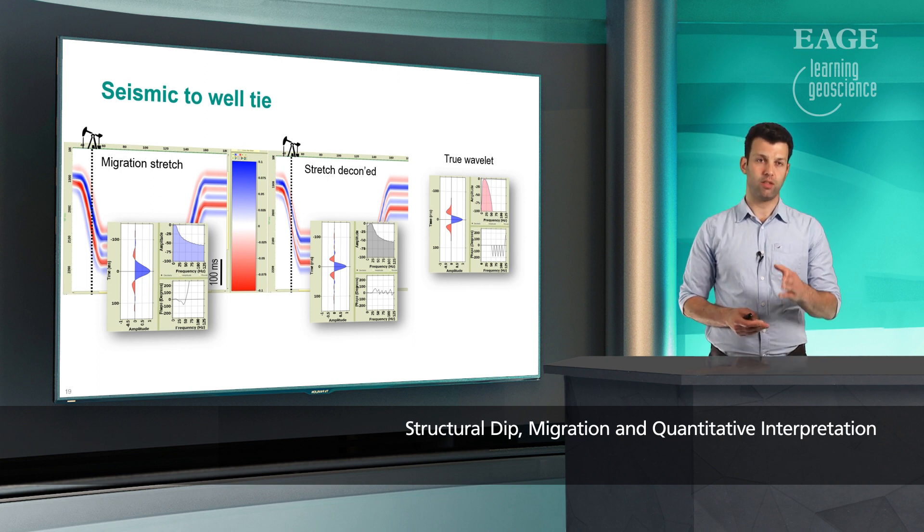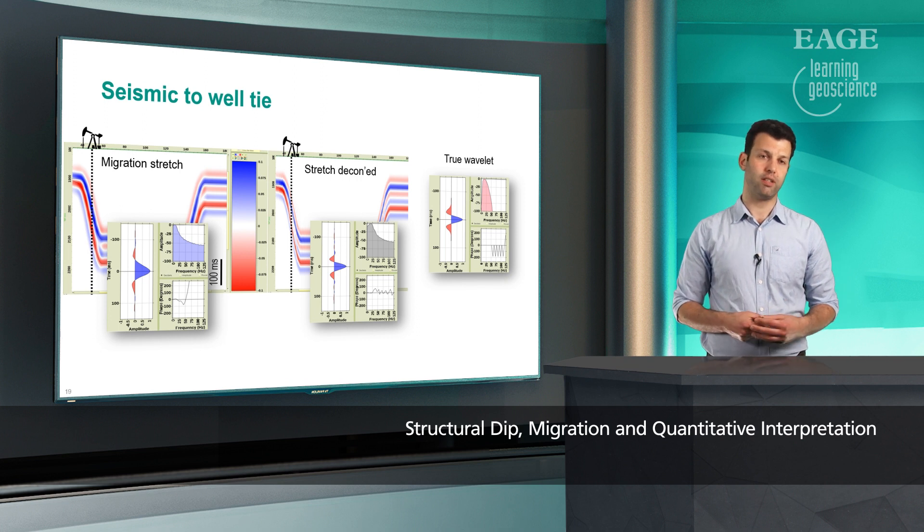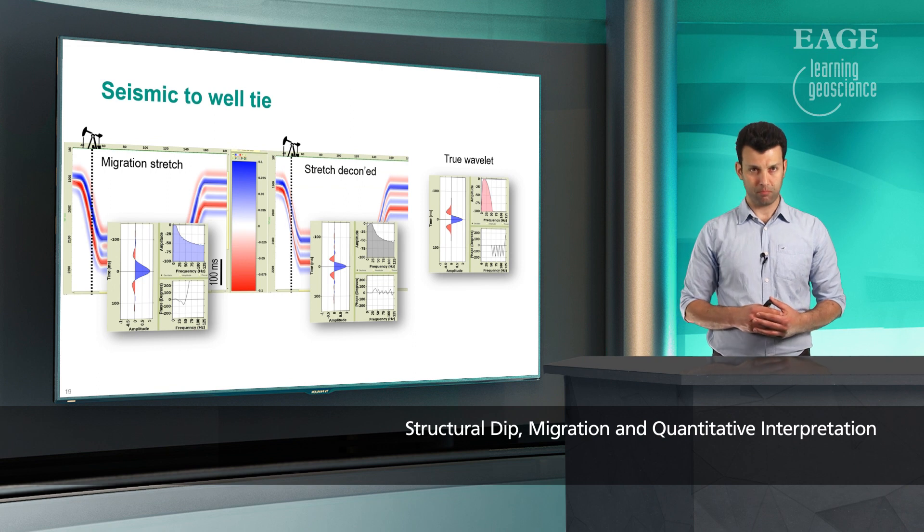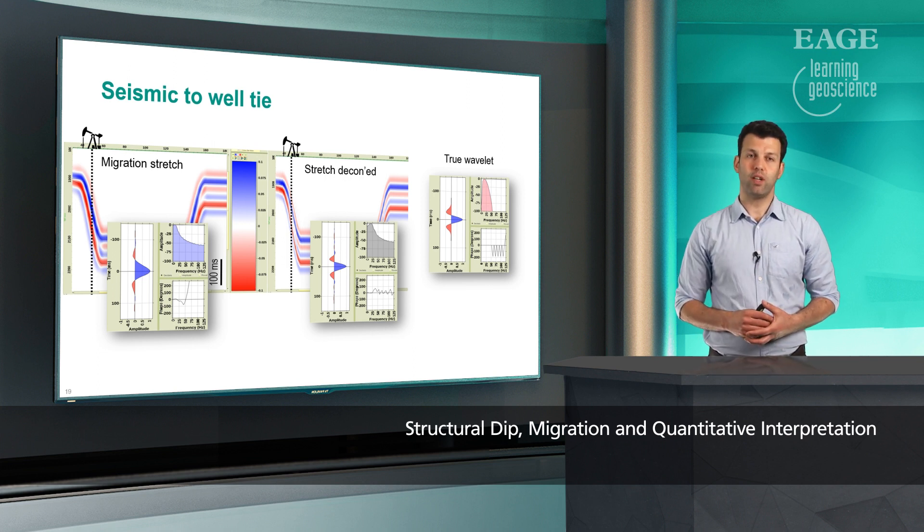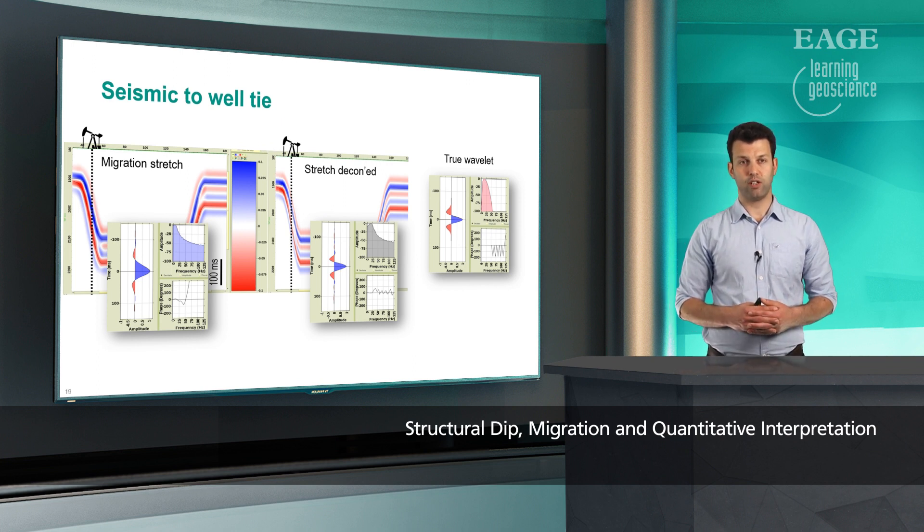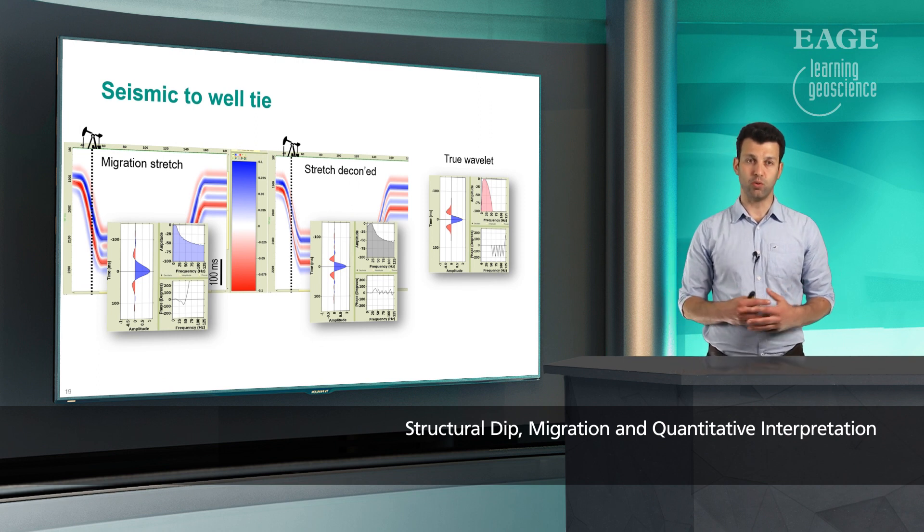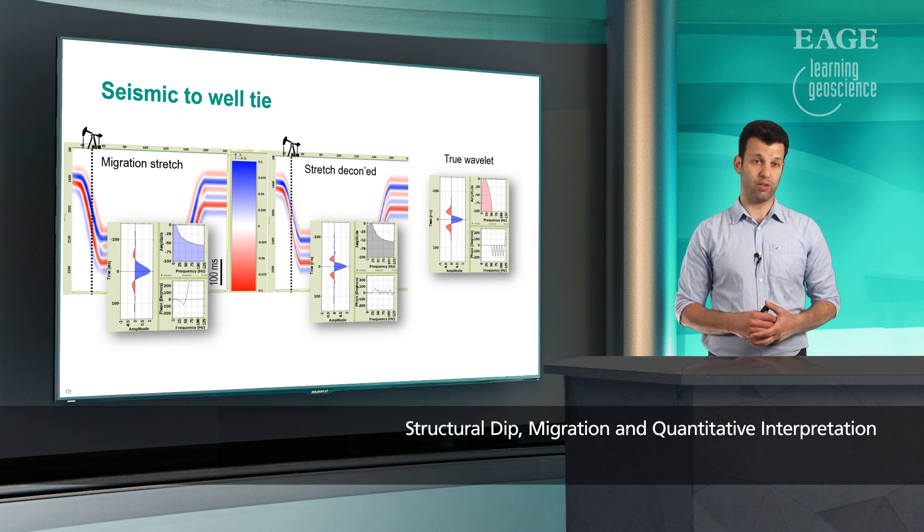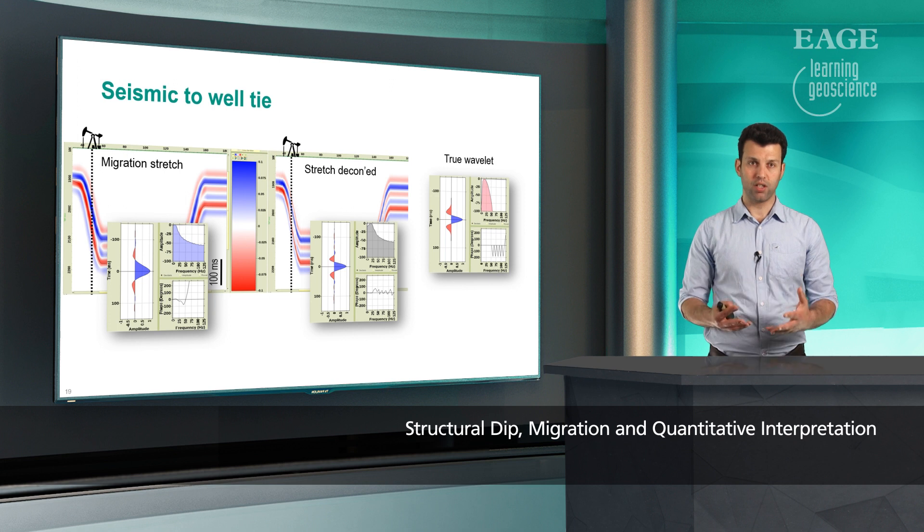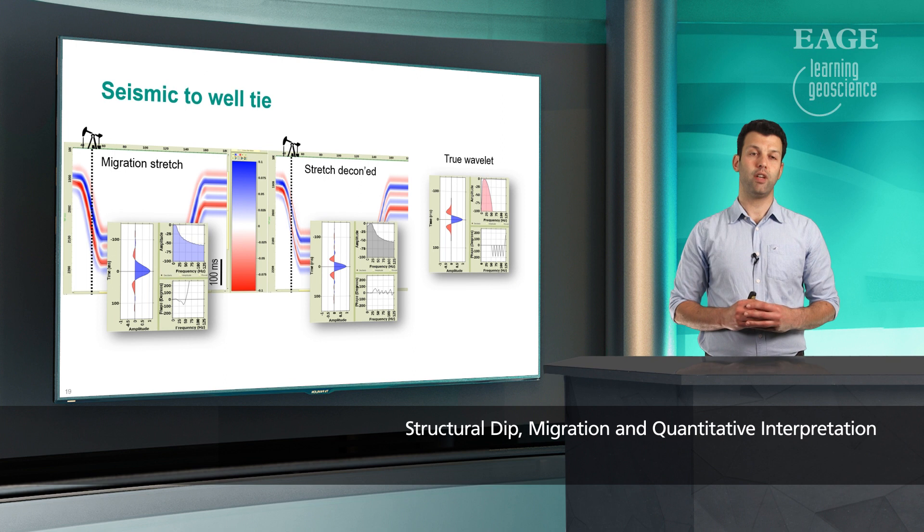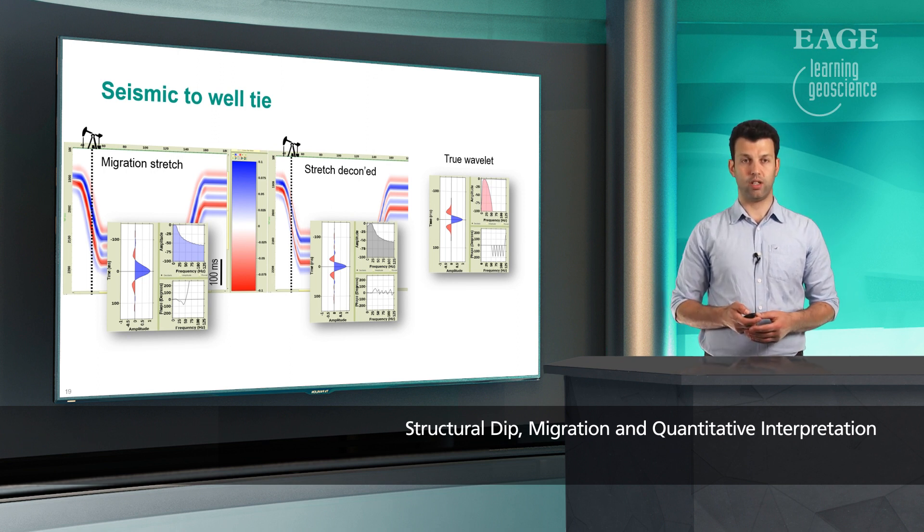Seismic to well tie, again assuming that well cutting through the dipping event. Here you can clearly see that the estimated wavelet is a stretched version of the true wavelet on the far right-hand side. After deconvolution, the estimated wavelet is very similar to the true wavelet. One can argue that with the stretched wavelet estimated on the left-hand side, if we use that wavelet for seismic inversion, because in seismic inversion we effectively deconvolve the wavelet, that would account for the stretch effect automatically. This is true, but what happens is the problem shifts to the flat reflectors because that wavelet with a stretch effect is not the right wavelet for flat reflectors. The conditioning step we are proposing here effectively doesn't touch the flat events. It only deconvolves the stretch from dipping reflectors. And no matter where the wells are located, going forward we can estimate the wavelet which is correct for that location.